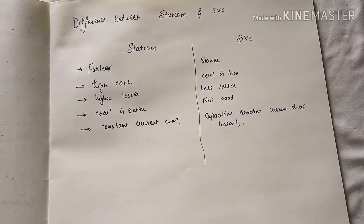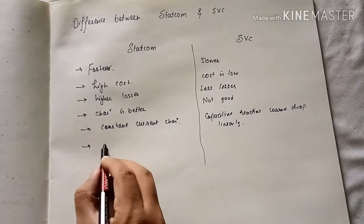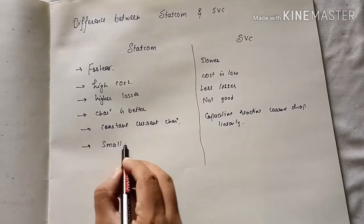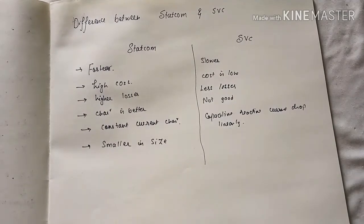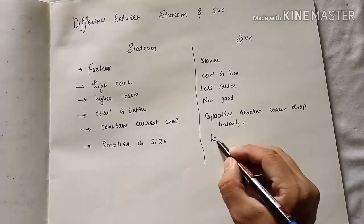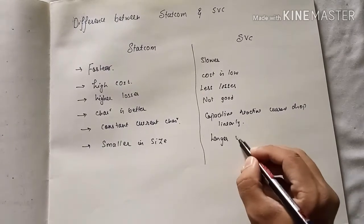STATCOM is smaller in size and SVC is larger in size.